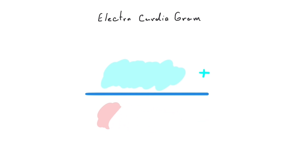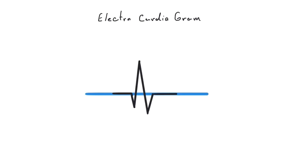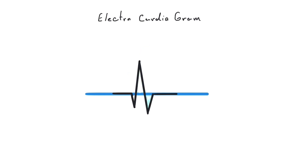Unlike the P and T waves, the QRS complex isn't a single wave — it's actually made up of three separate deflections: the Q wave, R wave, and S wave. The Q wave is the first negative deflection, representing the beginning of ventricular depolarization, specifically the depolarization of the interventricular septum. It's especially important because in some leads it's normally not present, and its appearance can indicate conditions like myocardial infarction. The R wave is the first positive deflection, reflecting depolarization of the main mass of the ventricles. The S wave is the first negative deflection after the R wave, corresponding to the final part of ventricular depolarization, especially in the upper parts of the ventricles.